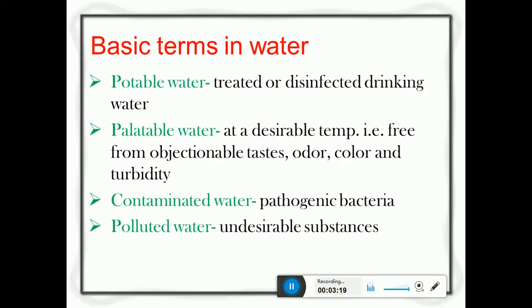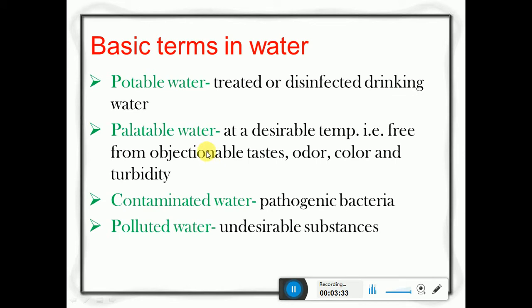We classify water characteristics majorly into three types. First, let us understand some basic terms. Potable water is nothing but treated or disinfected drinking water - water which is free from all forms of impurities like bacteria, no excess of minerals, harmful organisms, and disease-causing organisms. Water which is free from all forms of pathogens is called potable water.